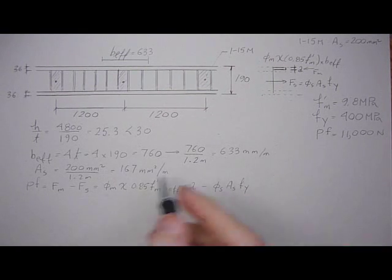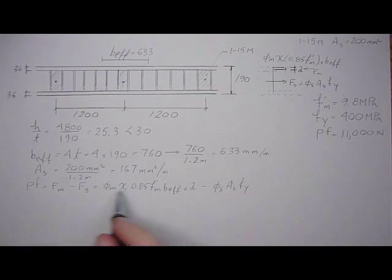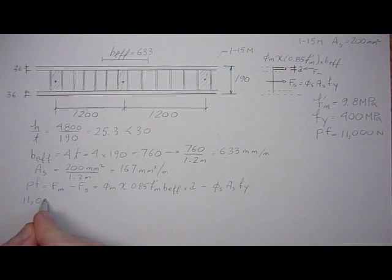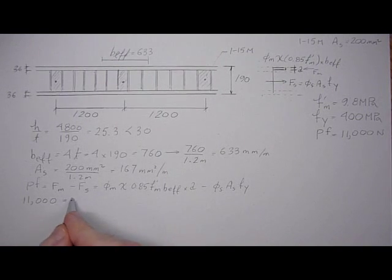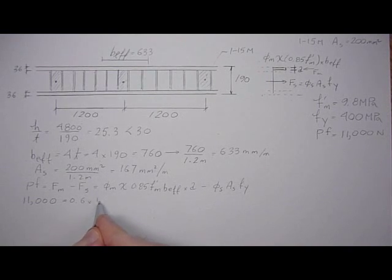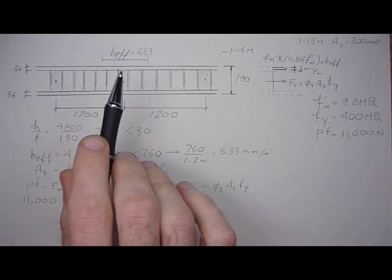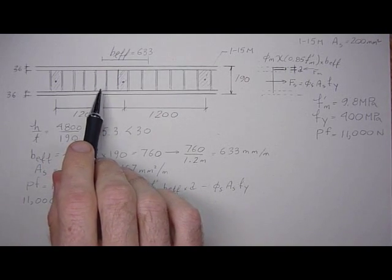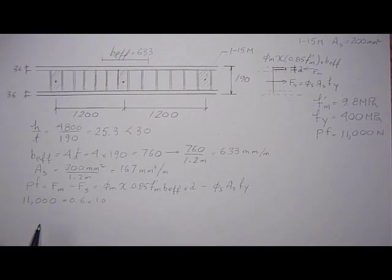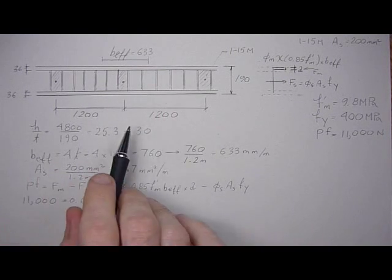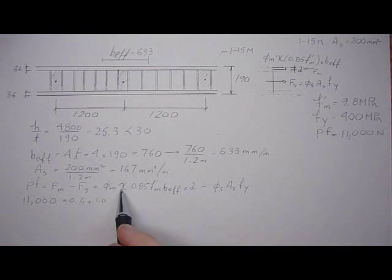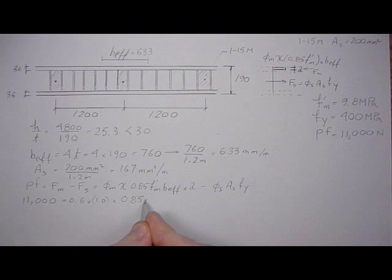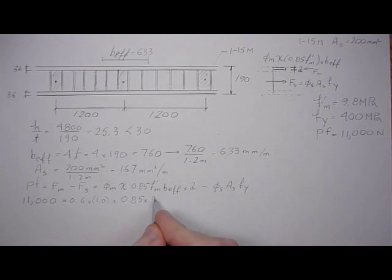So we can solve for A now based on this equation of statics. So the factored axial load is 11,000. That's acting on the section. And then phi-m is 0.6. X is 1 because the stresses are perpendicular to the bed joint. For lintels, X was 0.5 in the previous tutorial set. But when we're going with a vertical spanning wall, the code notes that it's actually stronger when it spans vertically than it does horizontally. So that's why we have the 1.